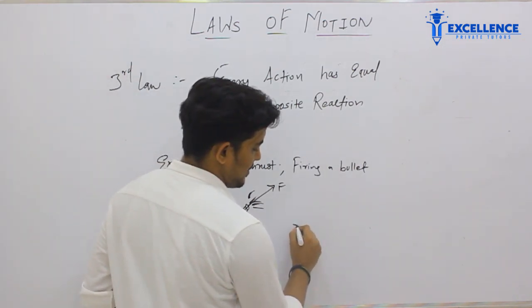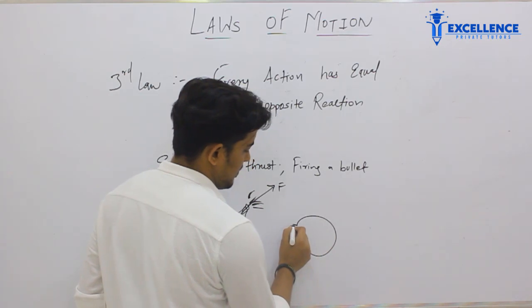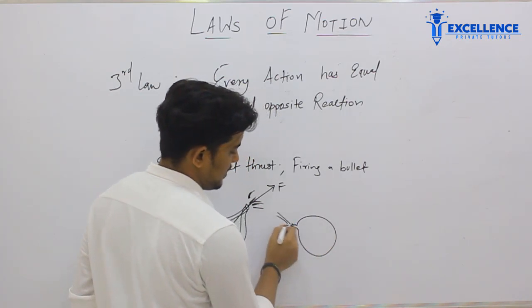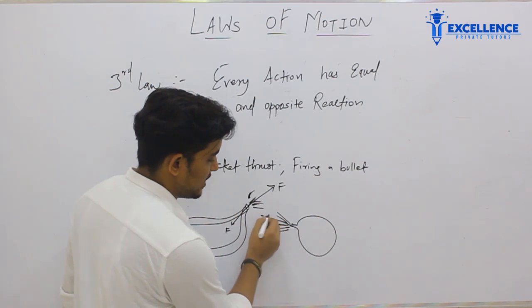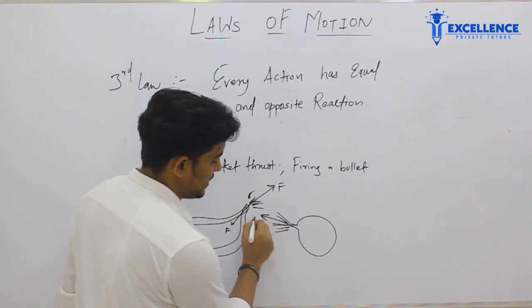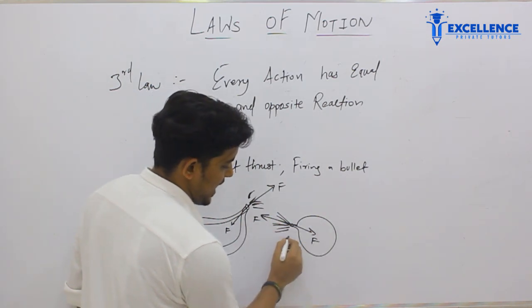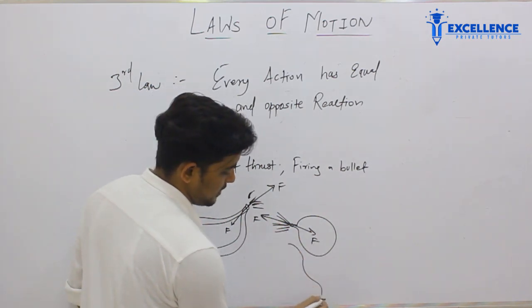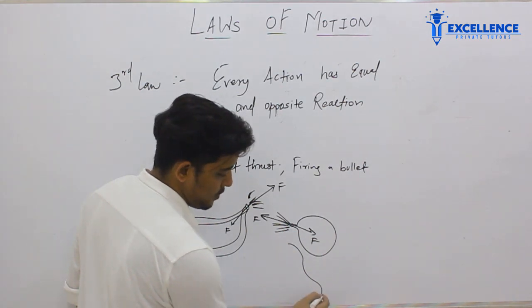For example, the balloon — what happens in the case of a balloon? When you let the air out, the balloon is forced in one direction. It also gives an equal and opposite force back, and that is the reason the balloon moves and becomes smaller.